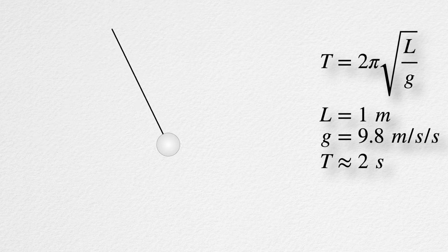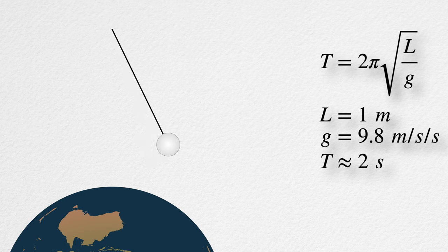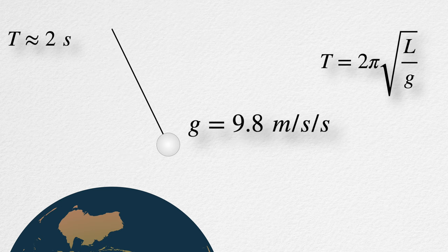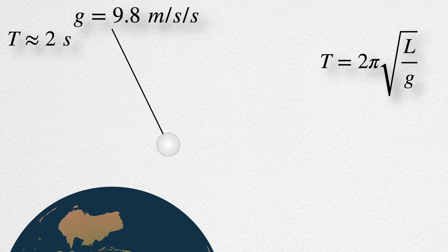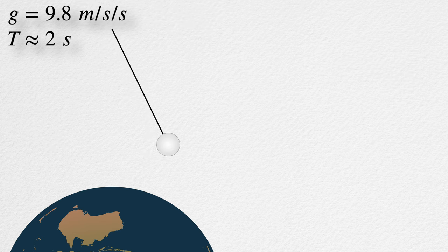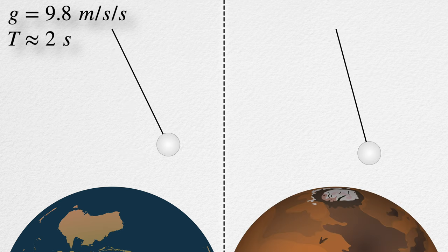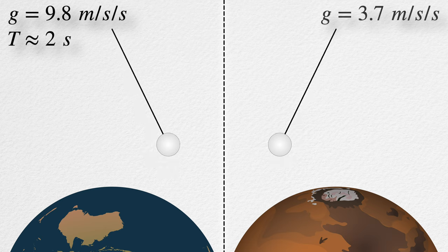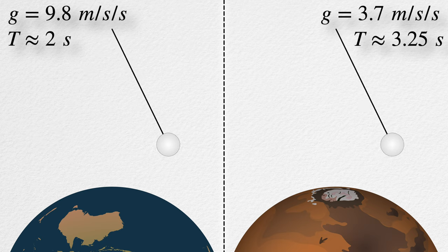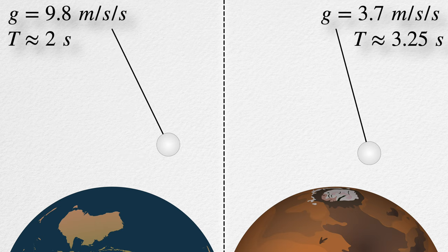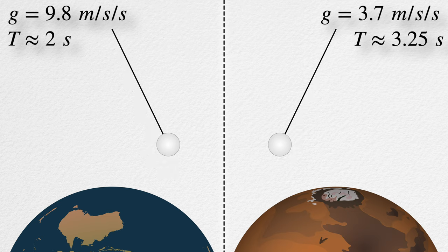Not taking into account the atmospheric drag, of course. As a result, we can put such clocks anywhere on Earth and they will show the exact time — as precisely as we can measure both the length of the pendulum and the acceleration of freefall. However, as you can see from the equation, the acceleration of freefall plays a critical role for such clocks. Therefore, if we place this exact clock somewhere with different gravity conditions — say on Mars, where the acceleration of freefall is only 3.7 meters per second squared — the period of such a pendulum becomes longer, about 3.25 seconds, which is approximately 1.6 times slower compared to the pendulum's period in Earth's gravity.